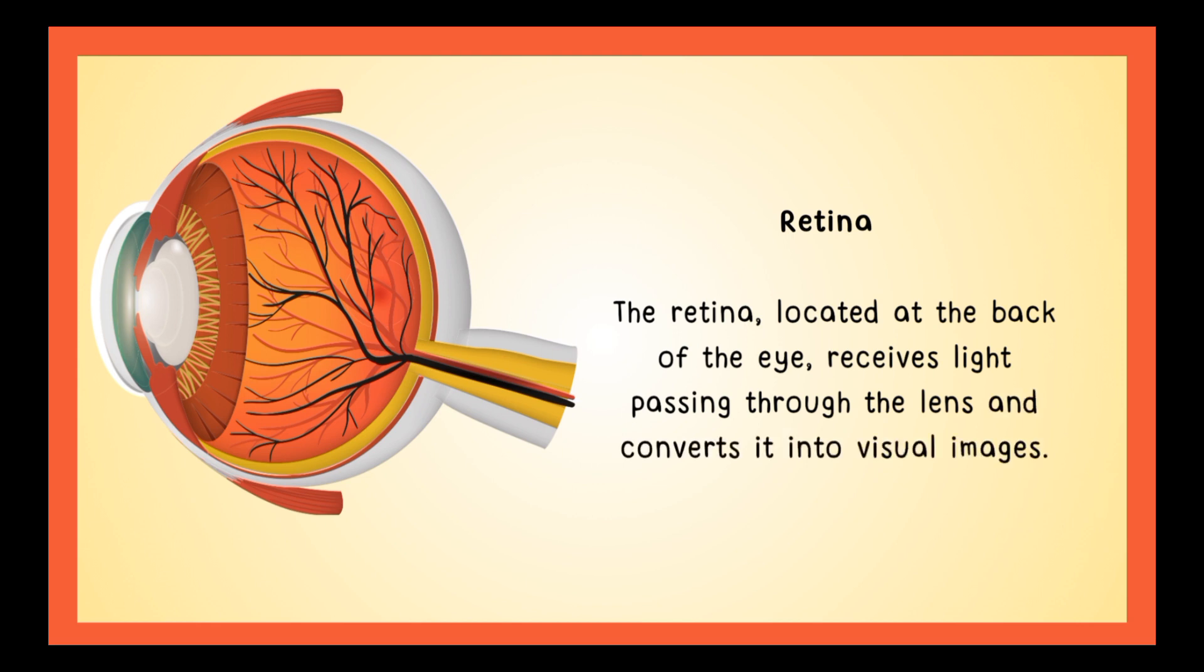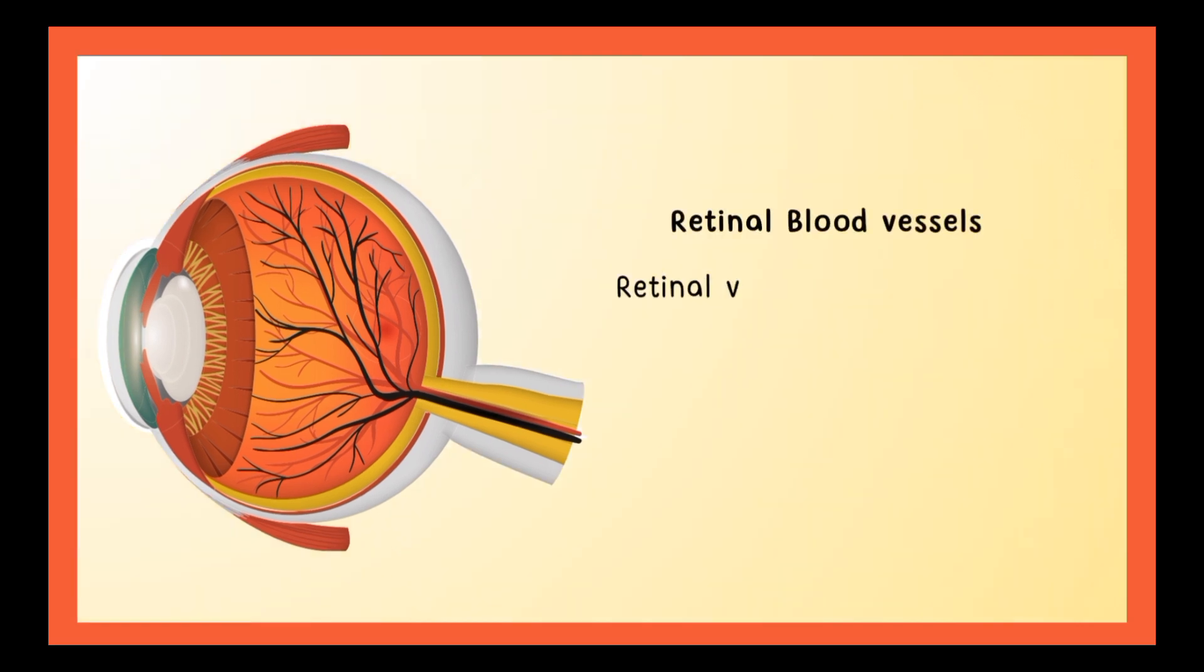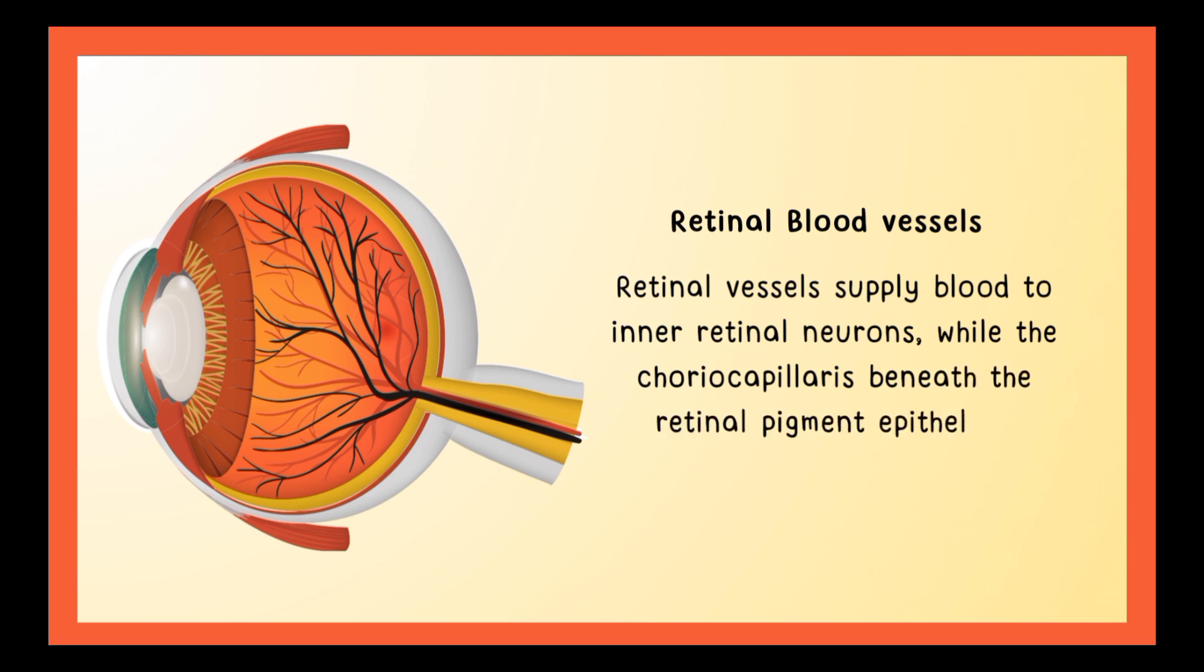The retinal blood vessels supply blood to the inner retinal neurons, while the choroid capillaries beneath the retinal pigment epithelium provide oxygen to the photoreceptor layers through diffusion.